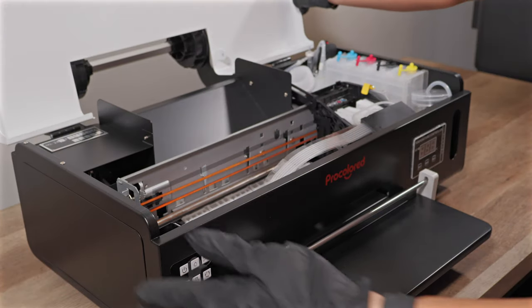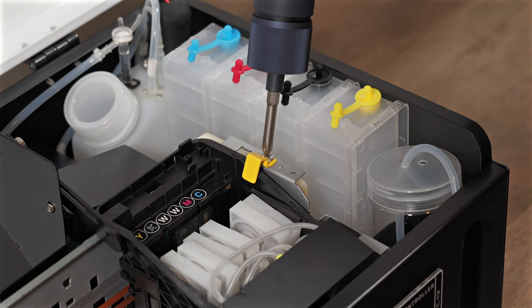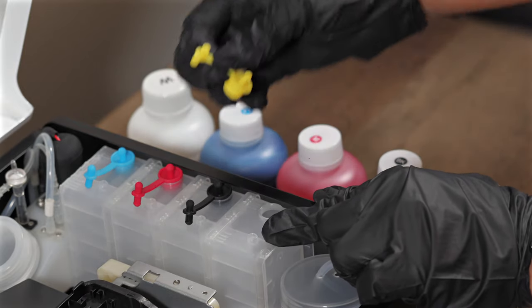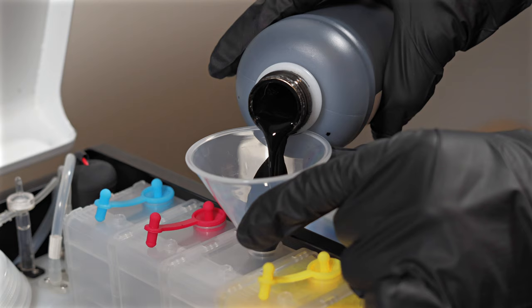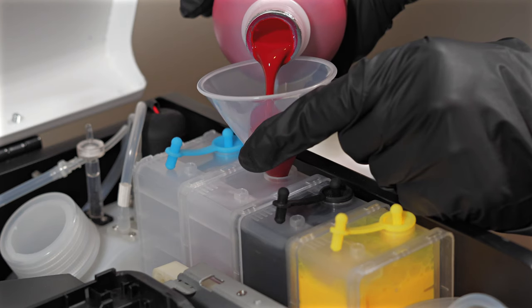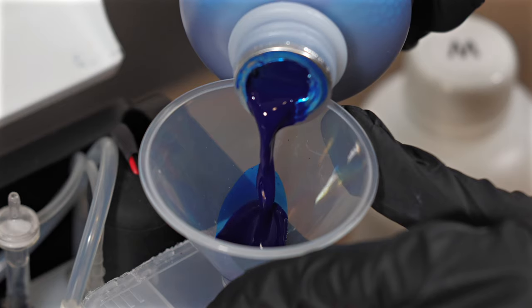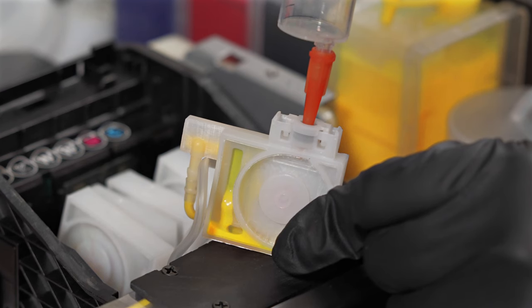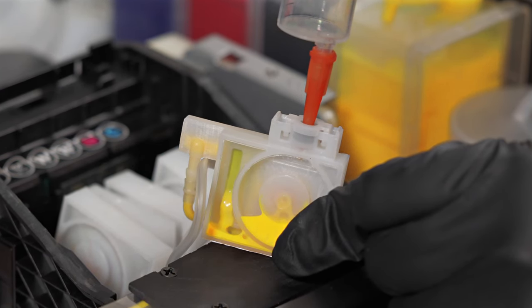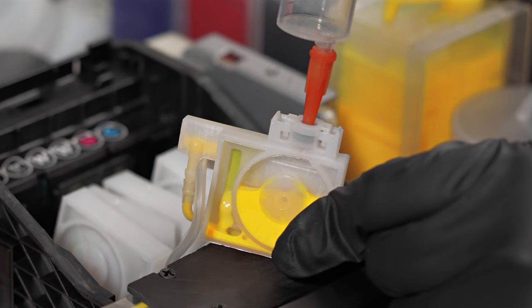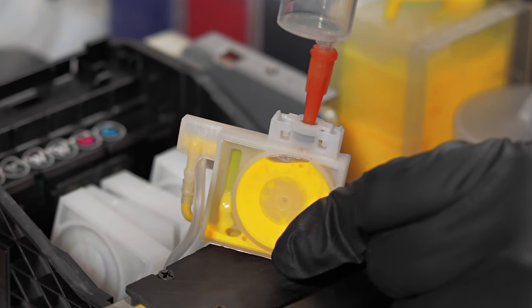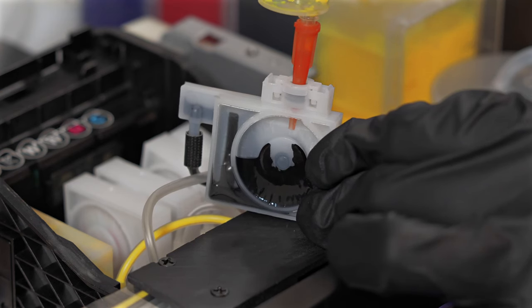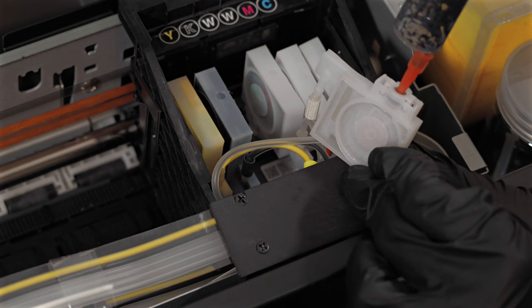Managing white ink can be tricky in DTF printing, but the F8 has an automatic white ink circulation system. This feature helps prevent clogs and sediment buildup, ensuring consistent print quality over time. User-friendly operation. ProColored has designed the F8 with beginners in mind. The included instructional materials, intuitive controls, and straightforward maintenance make it accessible, even for those new to DTF printing. High print resolution. The F8 delivers vibrant and sharp designs with a print resolution of up to 1,440 by 1,440 dots per inch, making it perfect for creating professional quality prints on various materials.